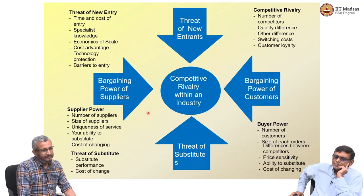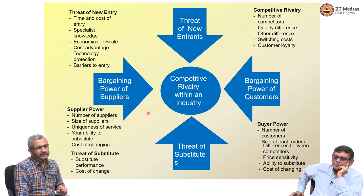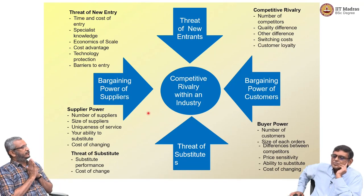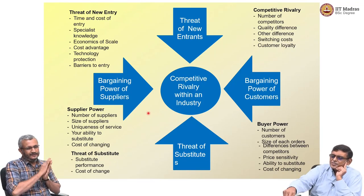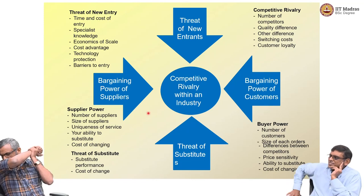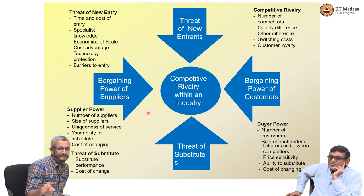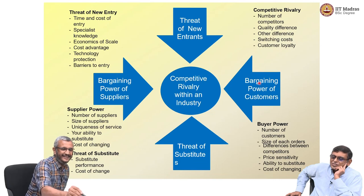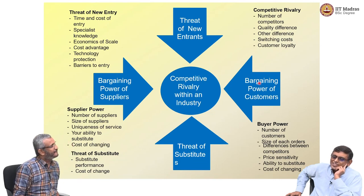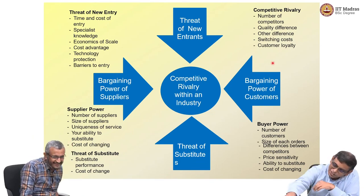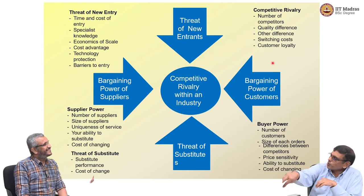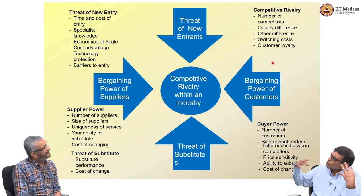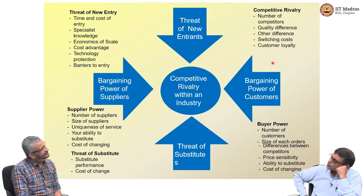These are the five forces which Porter talks about. There is one force inside — rivalry — and four from outside. All five exert pressure on the firm. They are pressing on the firm from outside, and from inside people are pressing on each other, and you have to survive that.